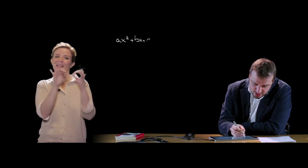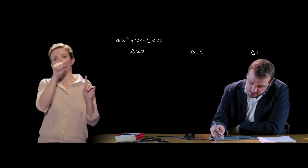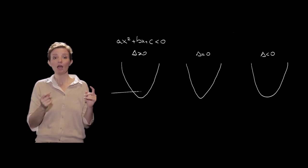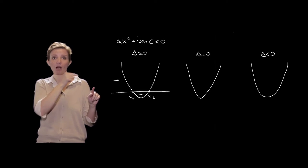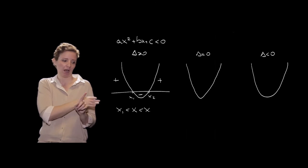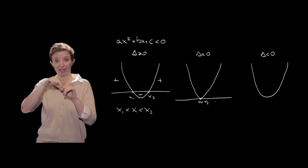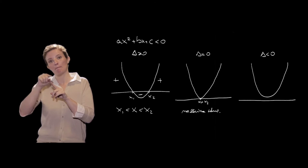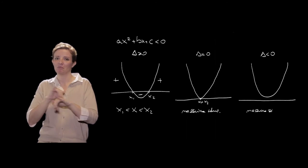Per completezza, vediamo il caso AX² + BX + C < 0, cioè quando il trinomio è negativo. I casi sono analoghi: per delta > 0, la parabola è negativa per valori compresi tra X1 e X2. Per delta = 0, la parabola è tangente all'asse in X1 = X2, risulta pari a 0 solo in quel punto, e quindi non è mai negativa: nessuna soluzione. Per delta < 0, la parabola si trova sempre sopra l'asse delle X, quindi non è mai negativa: nessuna soluzione.